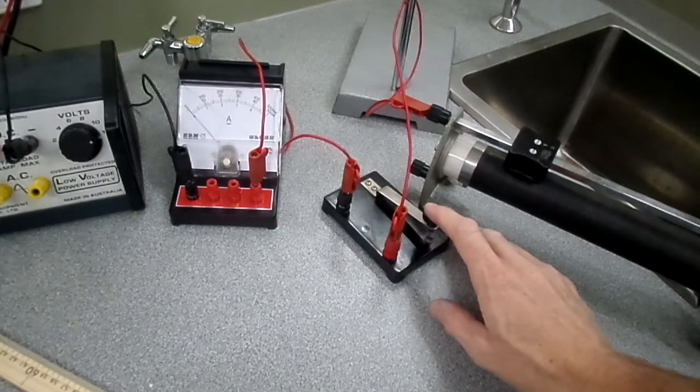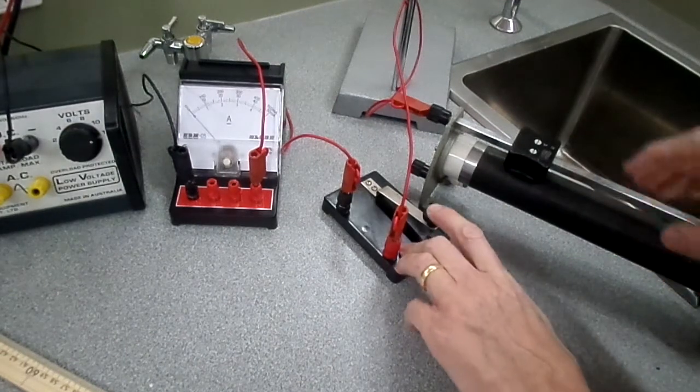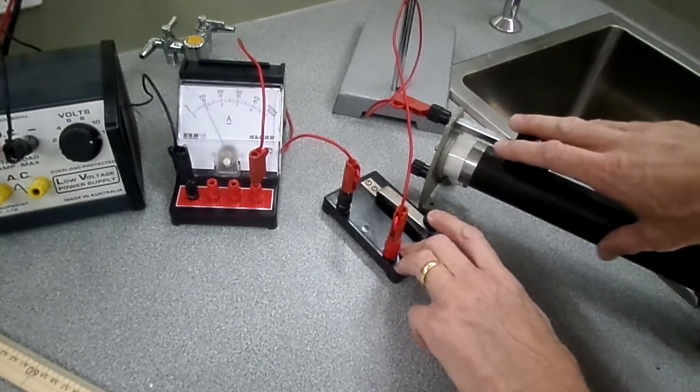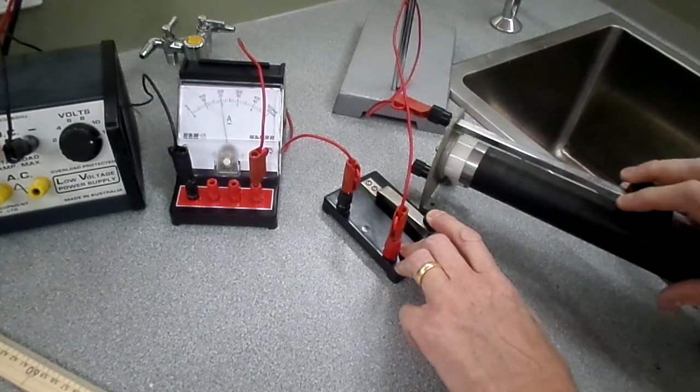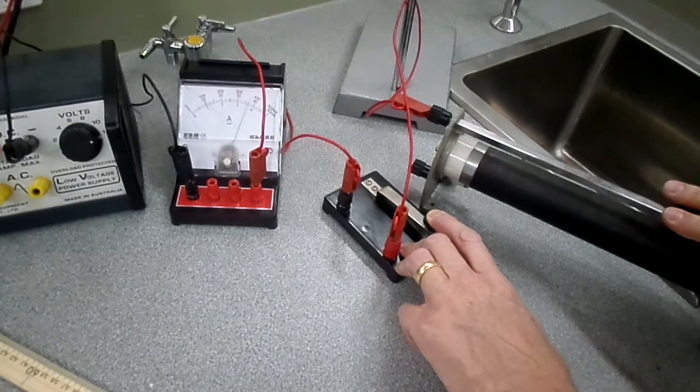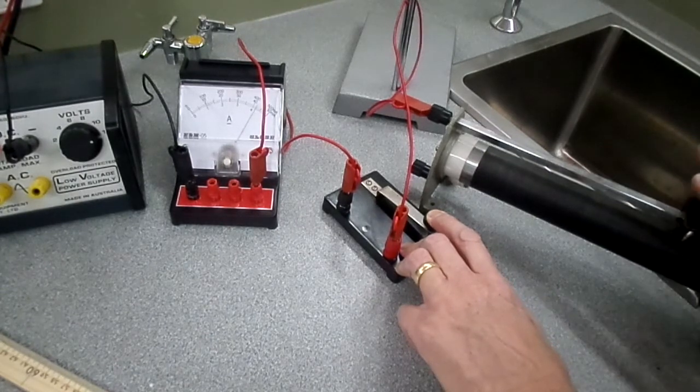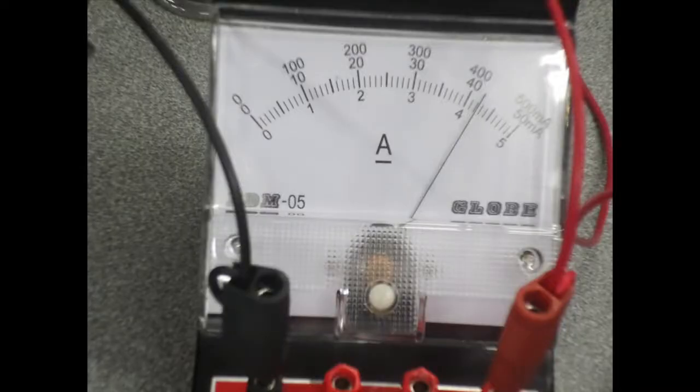The final part of our preparations is to use the rheostat to choose a current to flow through the wire. In this experiment, I've adjusted the rheostat to give the maximum current possible that stays below the 5 amp safety cutoff feature from the power packs. In this experiment, we're going to use 4.2 amps.